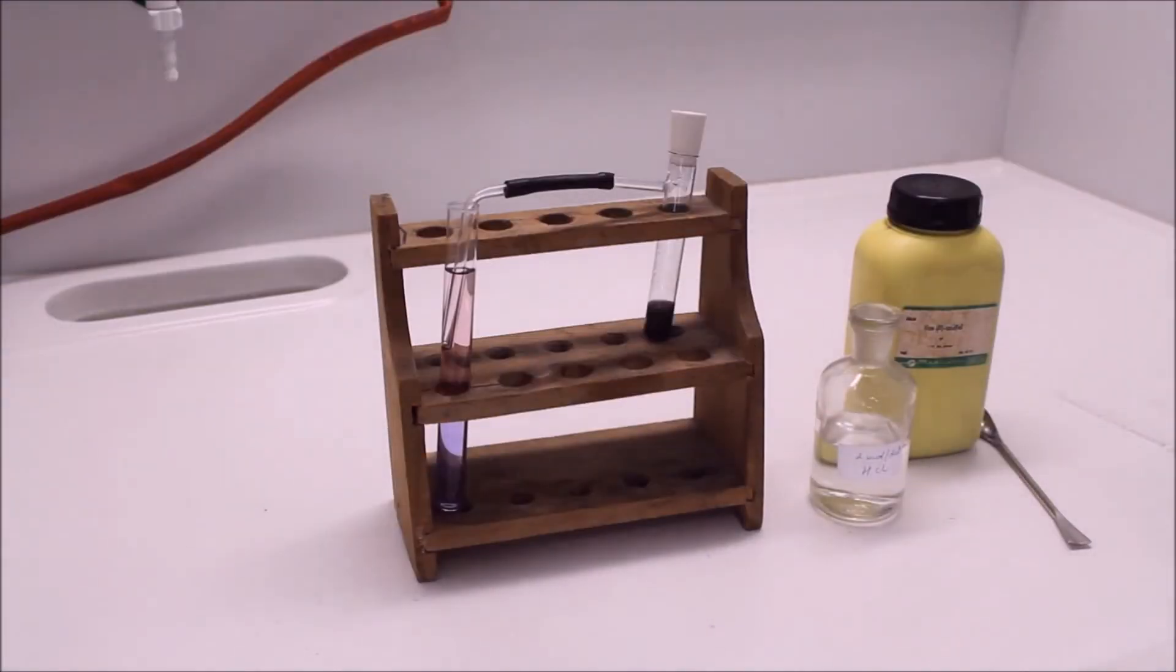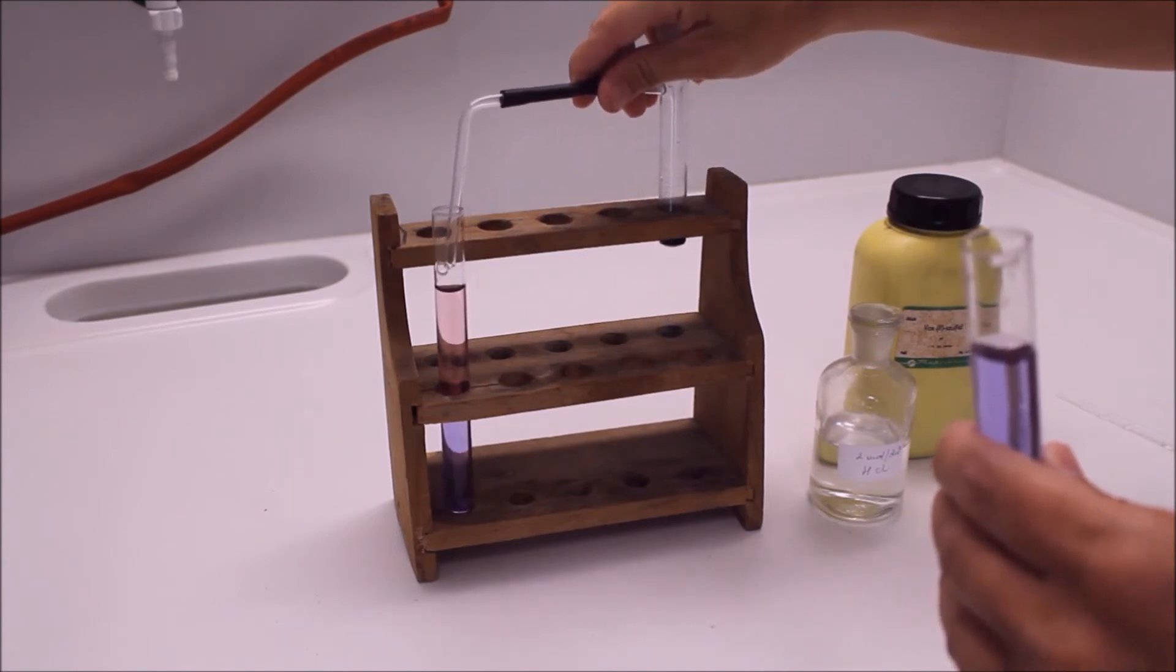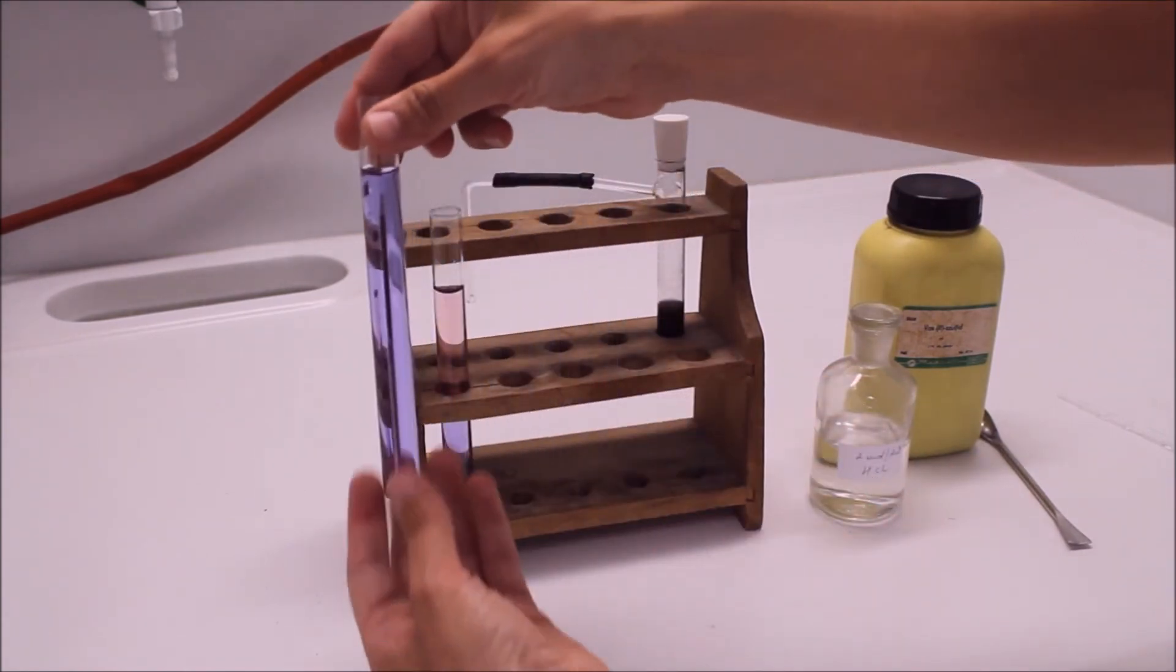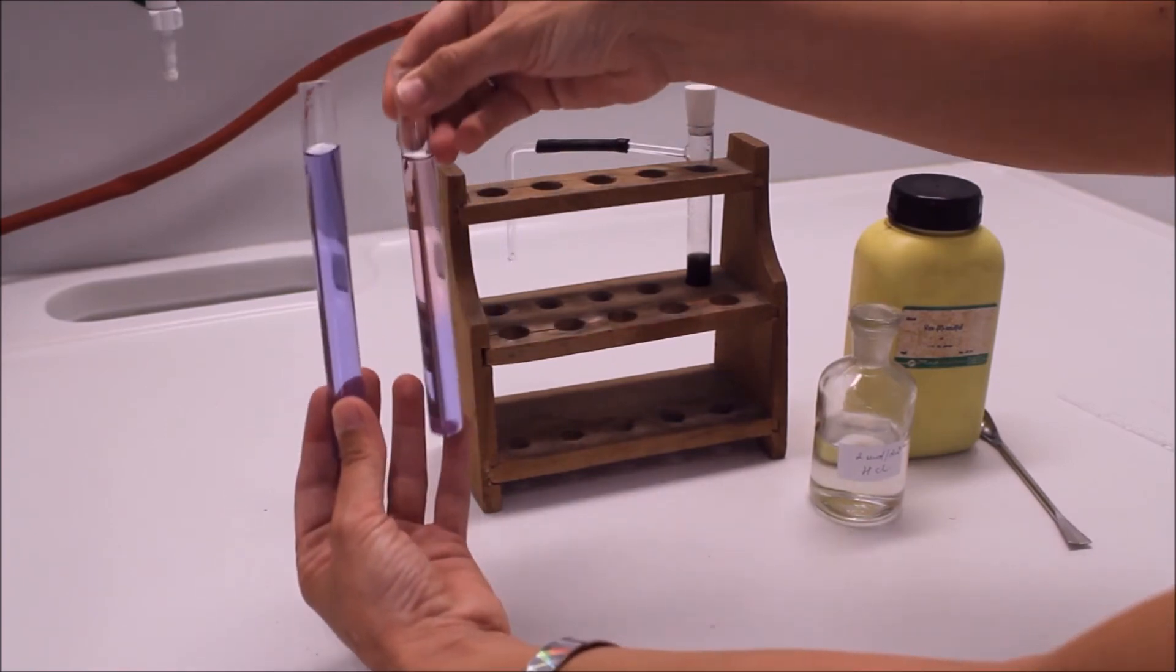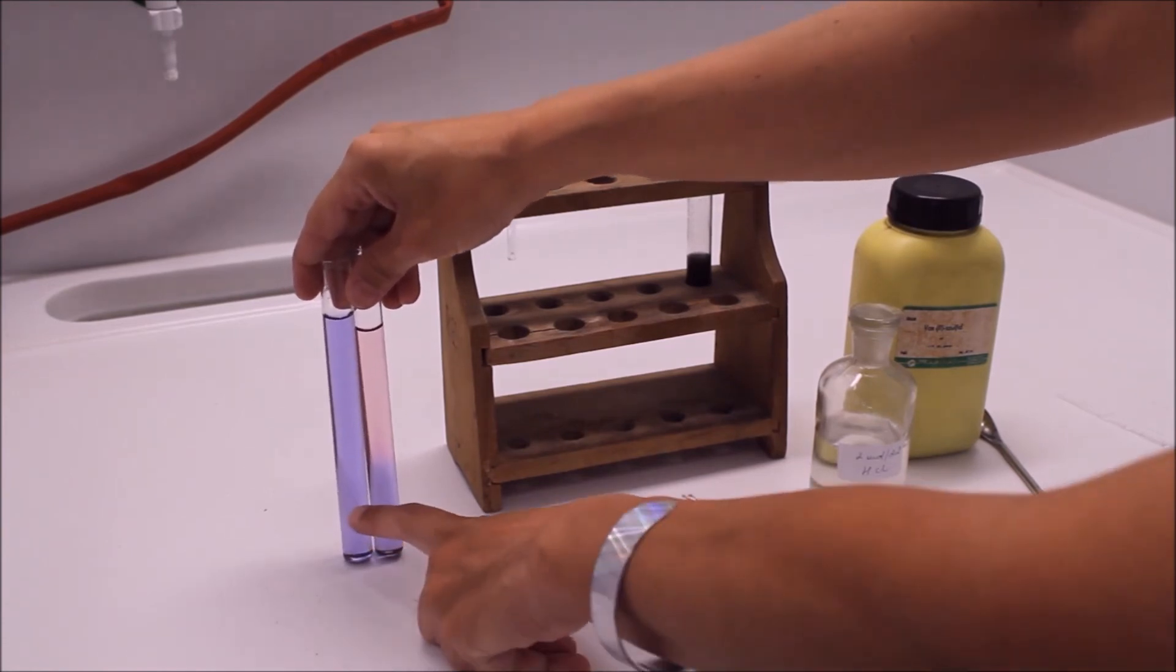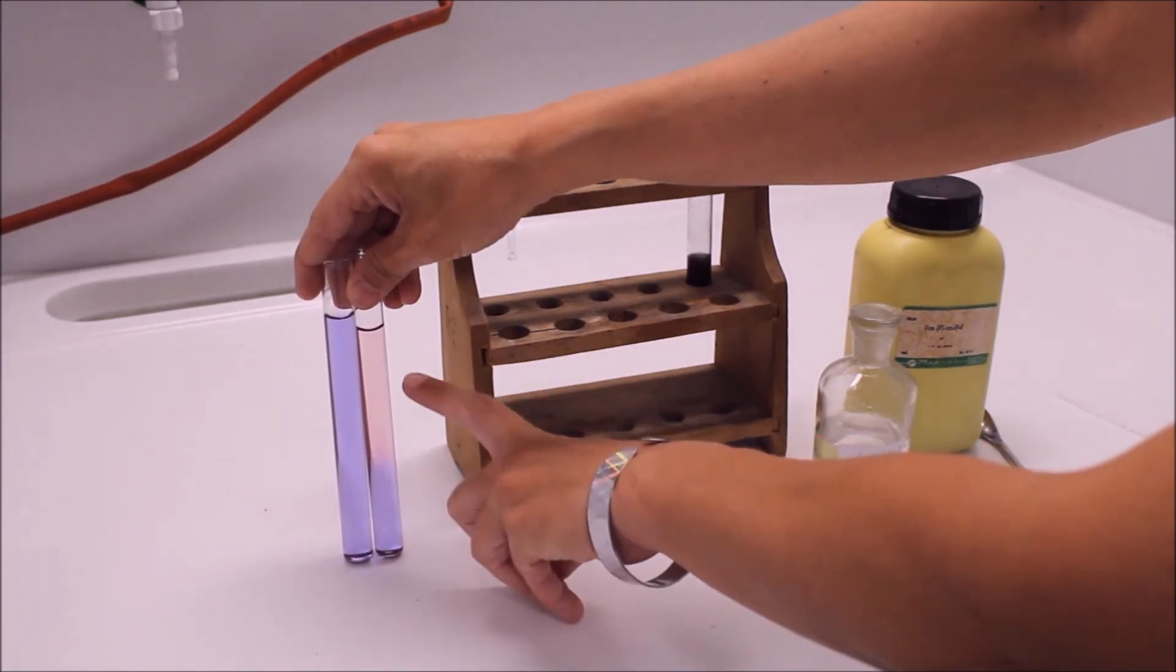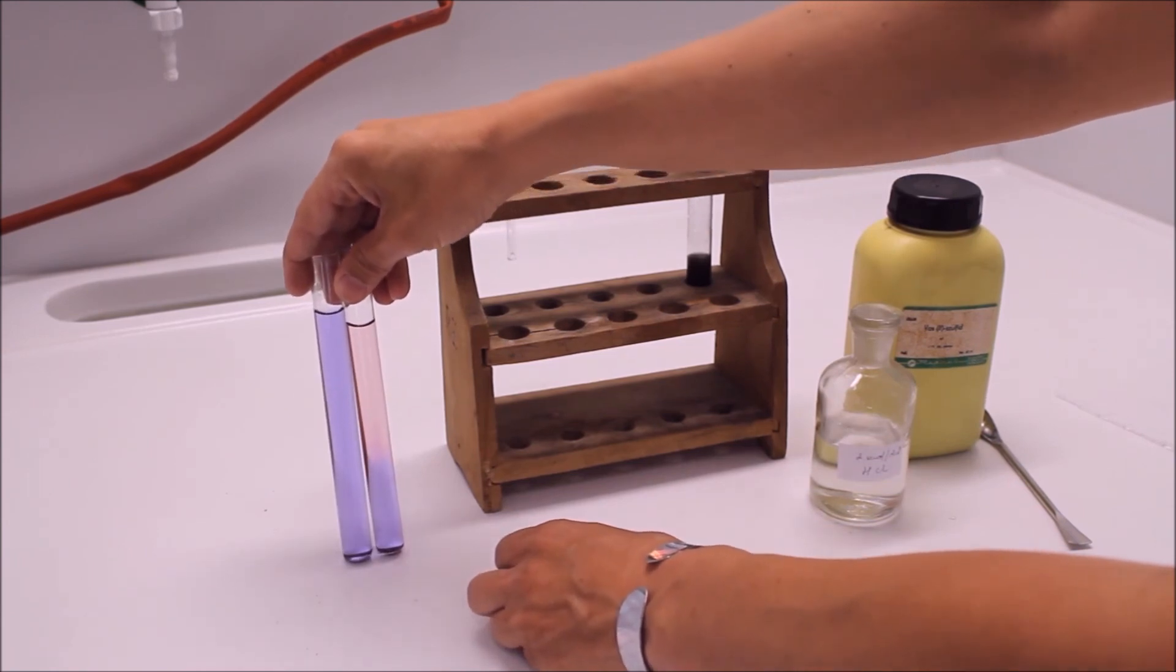Befejeződött a gázfejlődés, már nincs buborékolás. És érezni, nagyon erősen érezni ezt a tojásszagot. Megmutatom, hogy mennyire más lett, mennyit változott az oldat színe. Tökéletes a színváltozás. Ilyen volt a semleges kémhatású oldatban a lakmusz oldat színe, és ahol már a kénhidrogén beleoldódott a vízbe, ott szép pirosan mutatja a savas kémhatást.